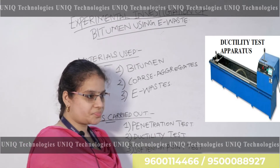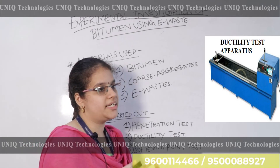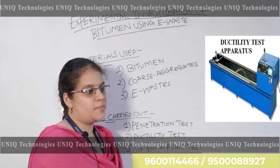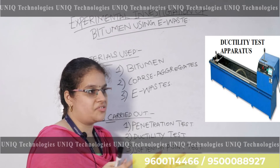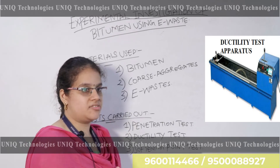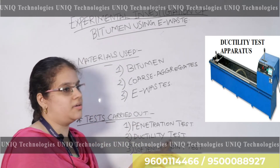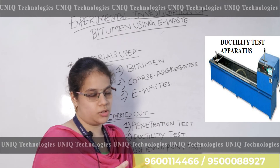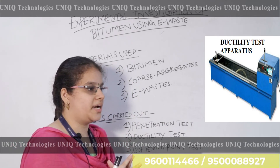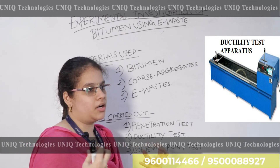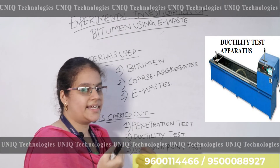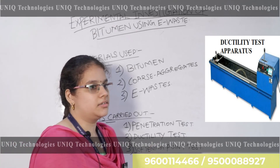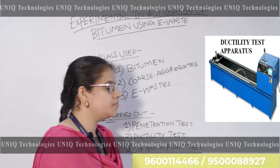Next is the ductility test. The bitumen is melted and softened, and using a ductility apparatus, we stretch it at a rate of 50mm per minute. We note the point at which it breaks. This test helps find out the elongation and detect failure in road pavement design.